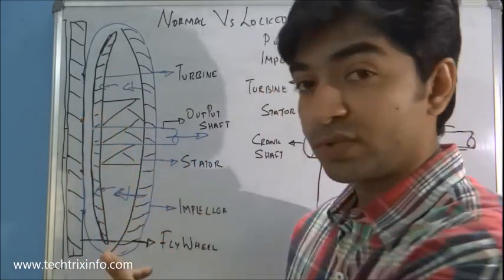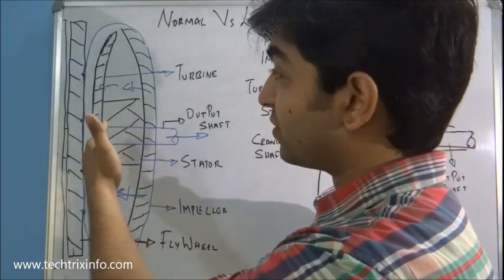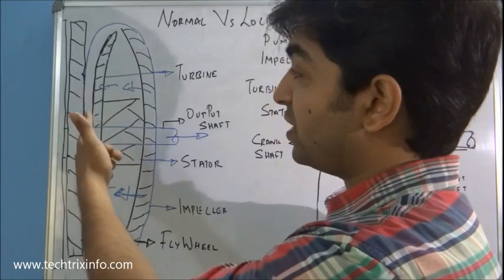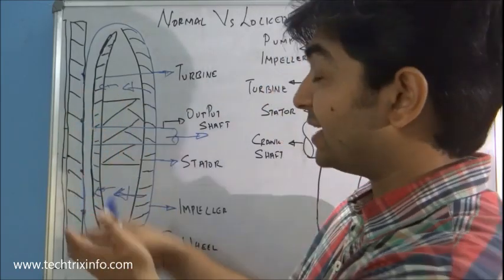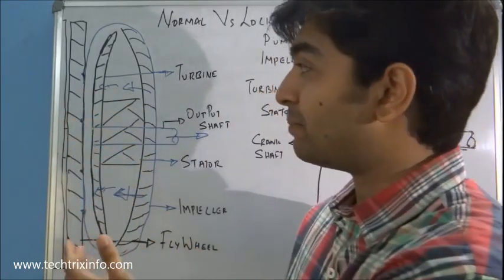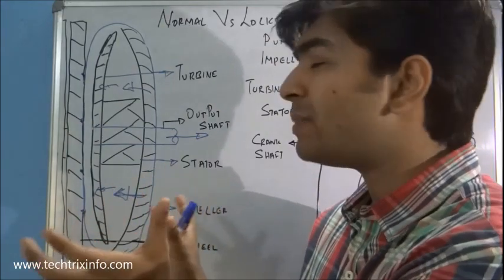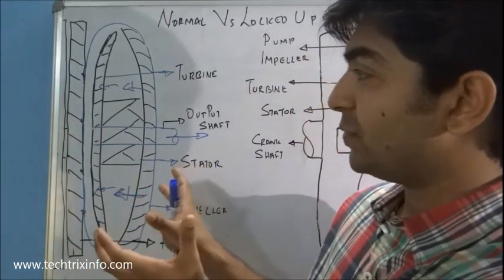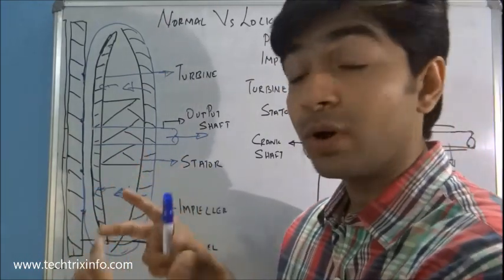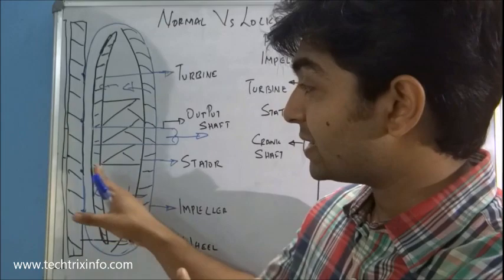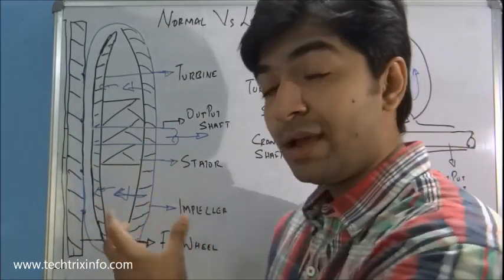There are impelling losses where heat is generated because of the slippage happening inside the torque converter. That is how a normal torque converter works — there is no mechanical linkage, it is only a fluid-linked unit.